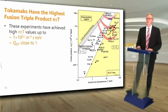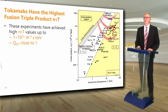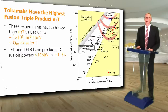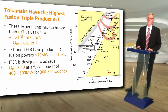This graph shows the fusion triple product versus the central ion temperature for a number of tokamaks built around the world. These experiments have achieved high N-tau-T values, up to 1×10²¹ per cubic meter seconds kilo-electron-volts, and Q-DT values close to 1. Two tokamaks, JET and TFTR, have produced DT fusion powers greater than 10 megawatts for 1 to 5 seconds. ITER is designed to achieve Q-DT greater than or equal to 10, at a fusion power of 400 to 500 megawatts for 300 to 500 seconds.